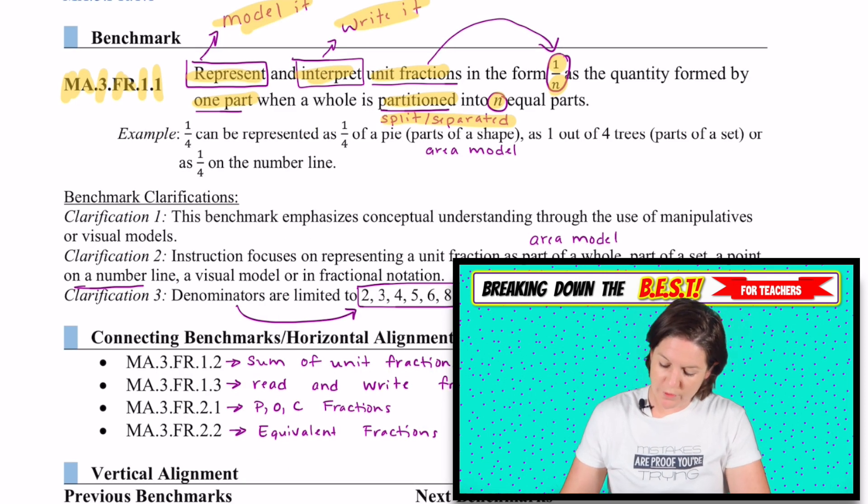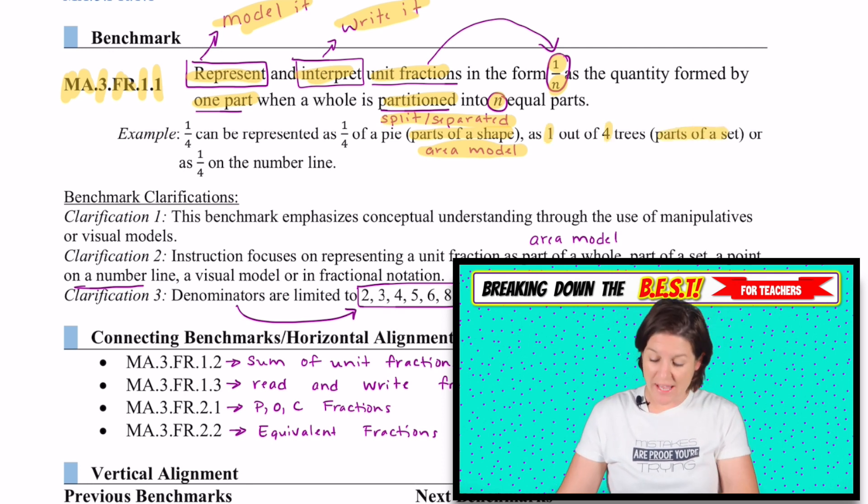In the example, it says that one fourth can be represented as one fourth of a pie, which would be parts of a shape represented usually with an area model, or one out of four trees, which will be parts of a set, or one fourth on the number line. We're focusing on area models, number lines and sets.